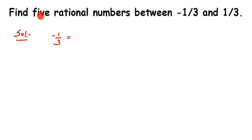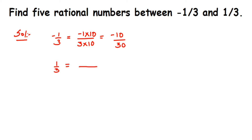So I'm going to multiply minus 1 by 3 with 10 in both numerator and denominator, giving us minus 10 by 30. The second number, 1 by 3, I also multiply by 10 — the denominators must stay the same — giving us 10 by 30. So now we have 30 in the denominator, and between minus 10 and 10 we have many numbers.